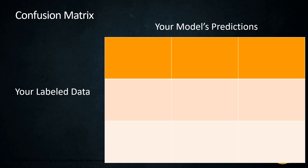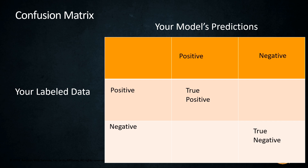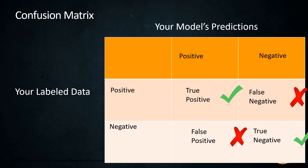Once we've trained our model, we need to evaluate it. A common way is with a confusion matrix. The confusion matrix takes your label data and the predictions coming out of your model, broken into positive and negative cases. When your model predicts positive and your label data is positive, that's a true positive. When predicting negative and label data is negative, that's a true negative — both good cases where your model is adding value. When your model predicts negative but the label is positive, that's a false negative. When your model predicts positive but the label is negative, that's a false positive — both cases where your model is not operating as expected.